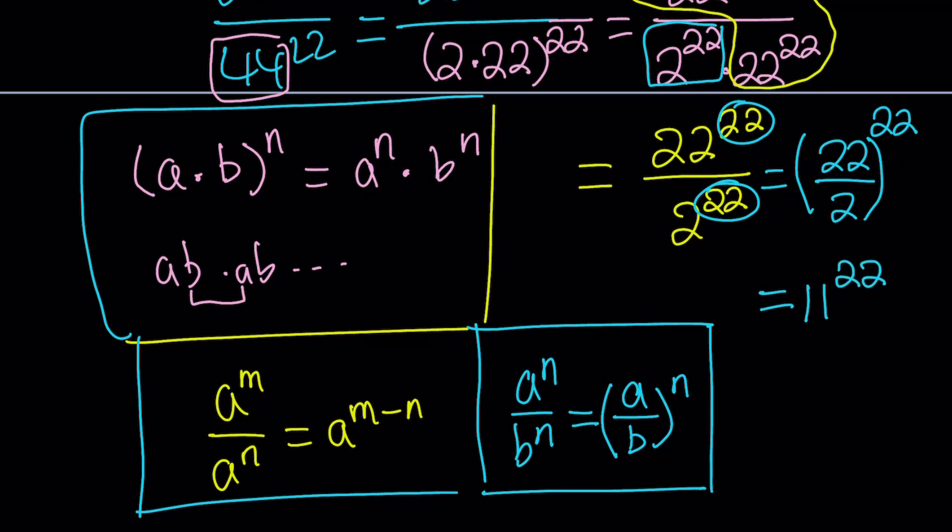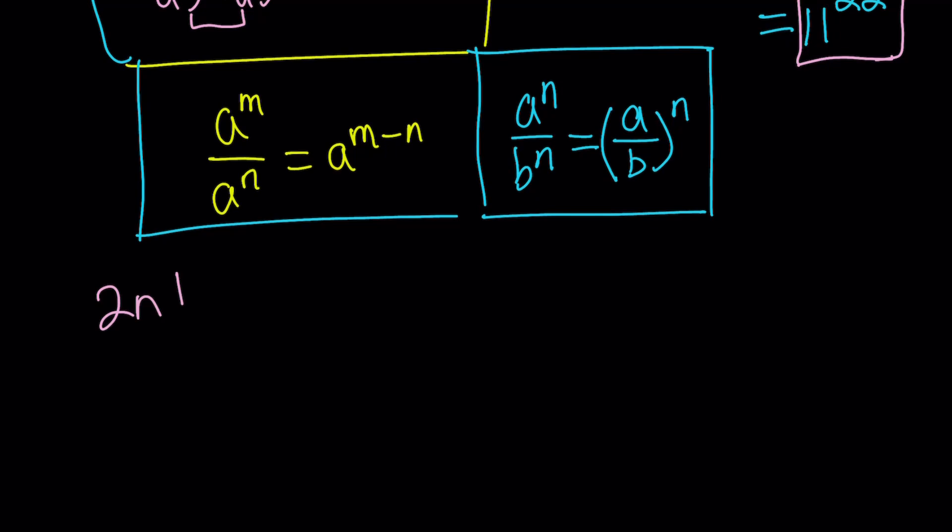We're going to look at the numerical value, but you can have an idea because 11 is slightly larger than 10, so this should be greater than 10 to the power 22. I'm going to show you what numerically that number is at the end. This would be the answer, and that brings us to the end of the first method. Let's take a look at the second method.